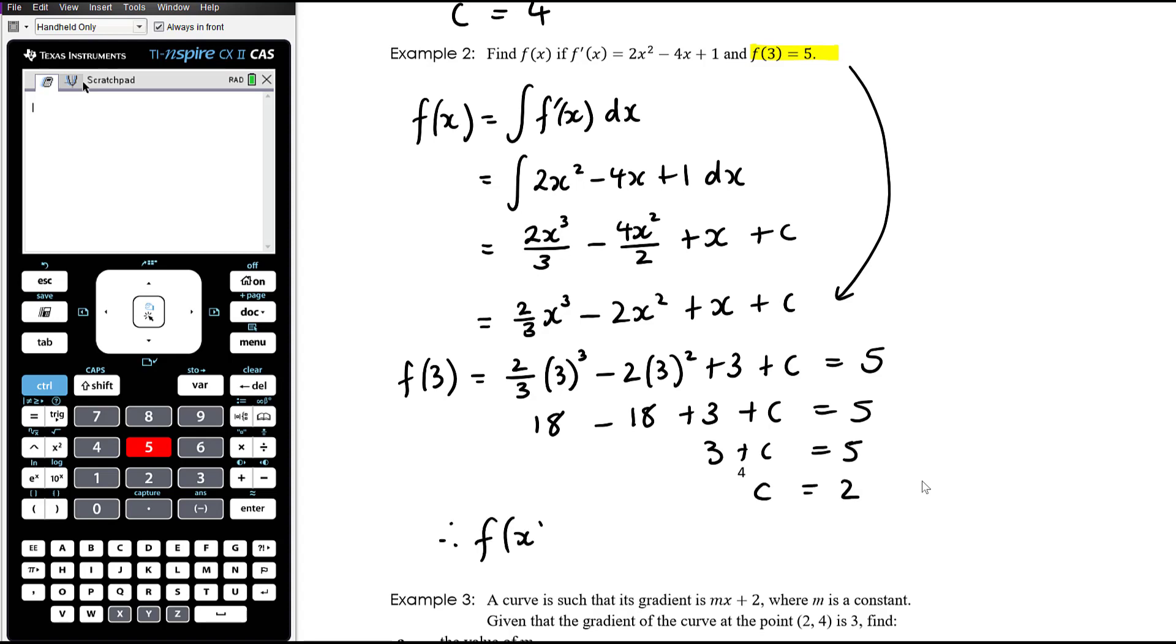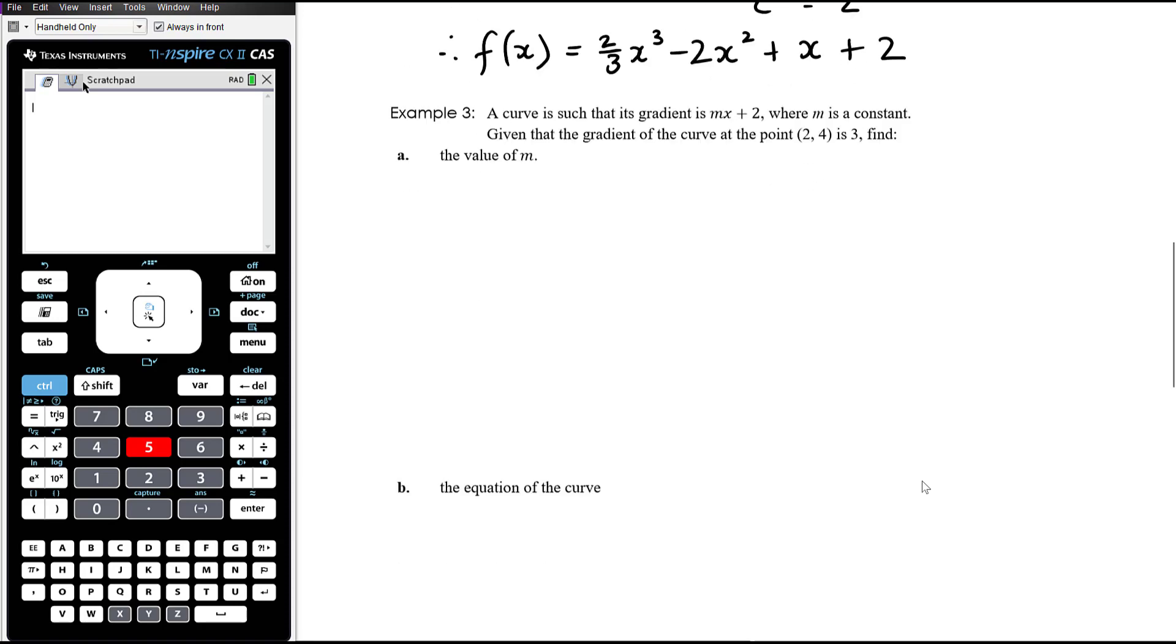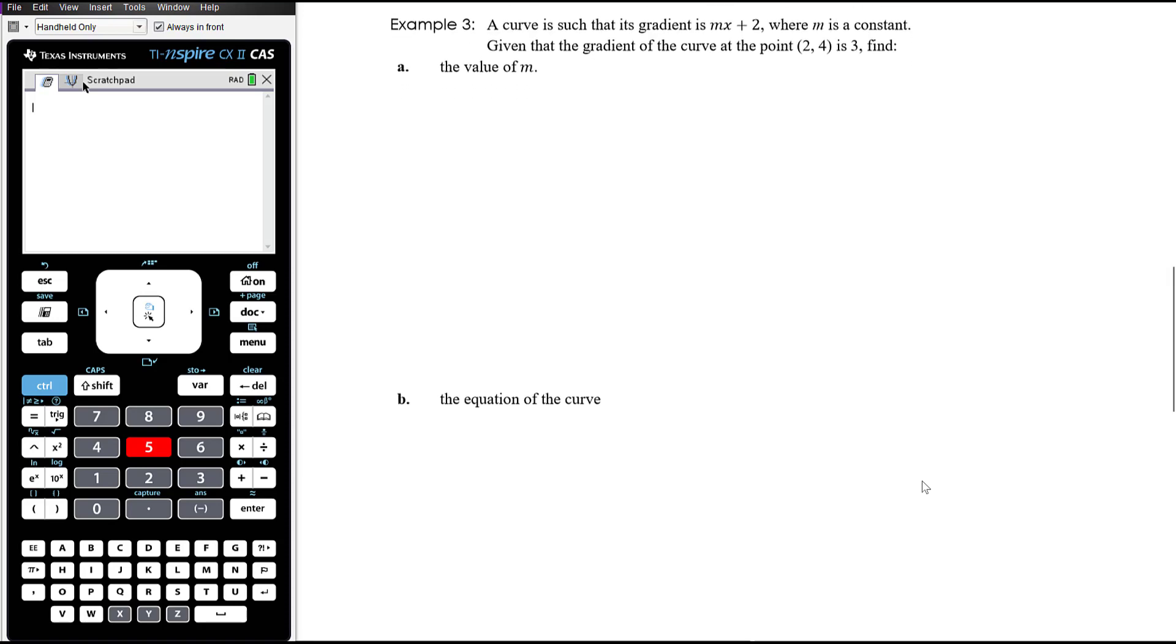And so therefore f(x) is equal to 2 thirds x cubed minus 2x squared plus x plus 2. Alright, example 3. A curve is such that its gradient is mx plus 2 where m is a constant. Given that the gradient of the curve at the point (2, 4) is 3, find the value of m and then the equation of the curve.